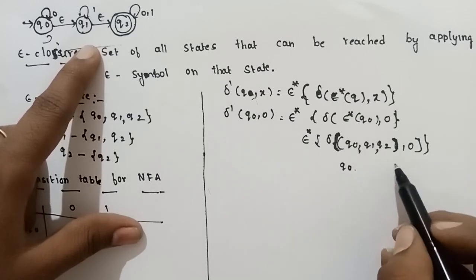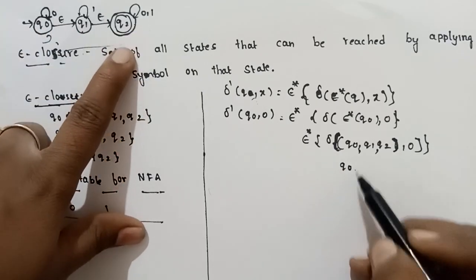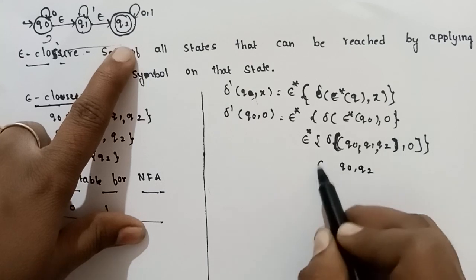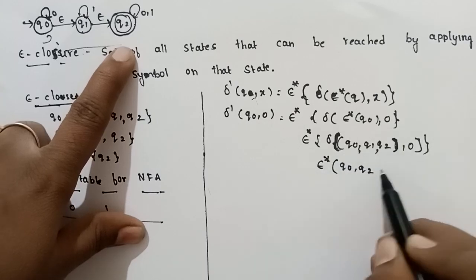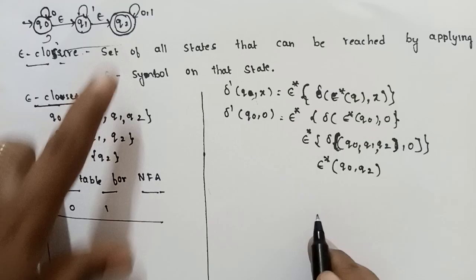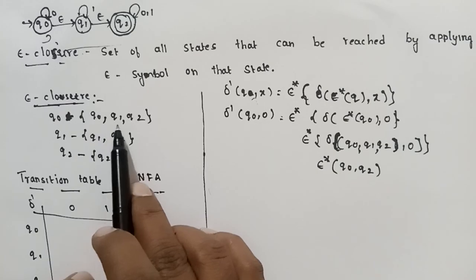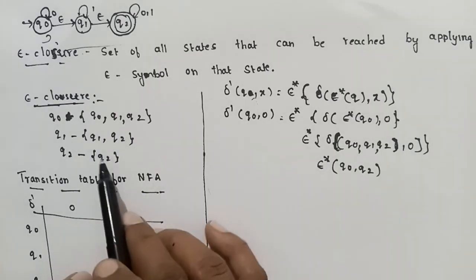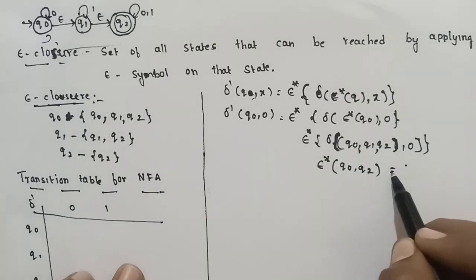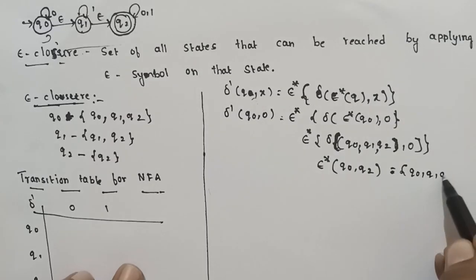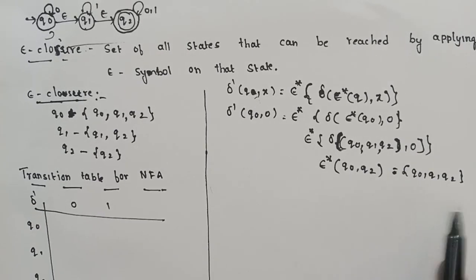From the diagram, delta of Q2 on 0 gives Q2. Applying epsilon closure of Q0 gives {Q0, Q1, Q2}, and epsilon closure of Q2 gives {Q2}. Taking the total union, we get {Q0, Q1, Q2}. So delta-prime of Q0 on 0 = {Q0, Q1, Q2}.